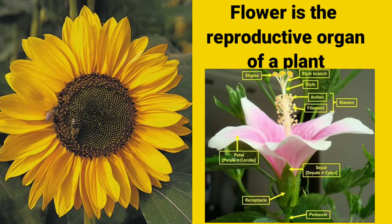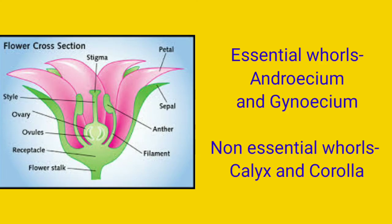The four whorls are calyx, corolla, androecium, and gynoecium. Among those four whorls, two are essential and two are non-essential. The essential whorls are the androecium, which is the male reproductive part of the flower, and the gynoecium, which is the female reproductive part. The non-essential parts are calyx and corolla.